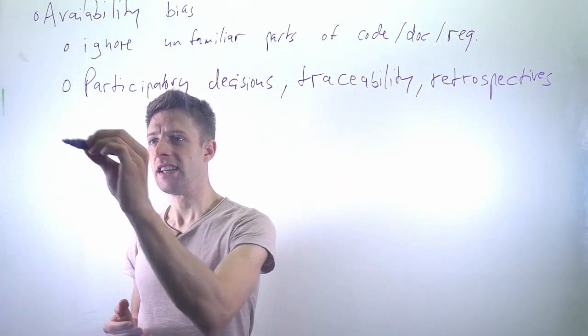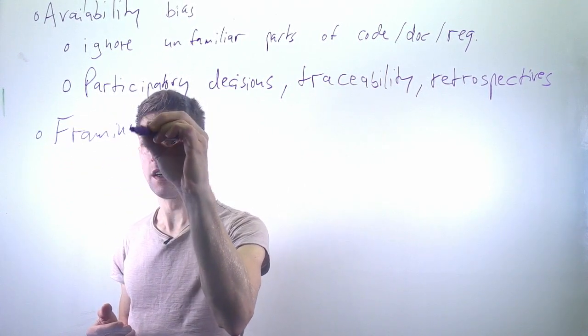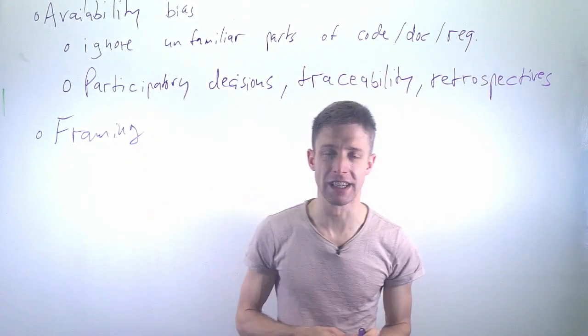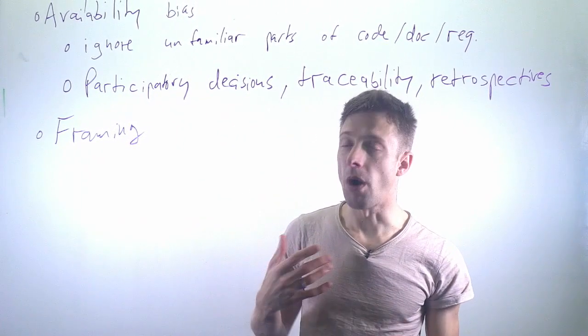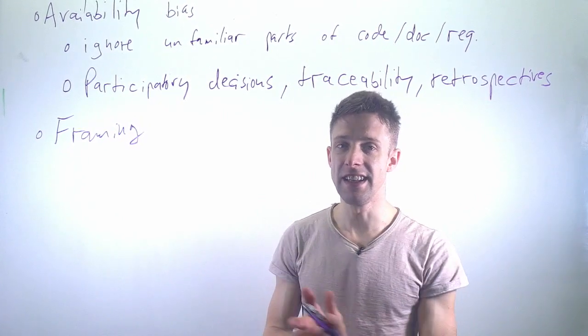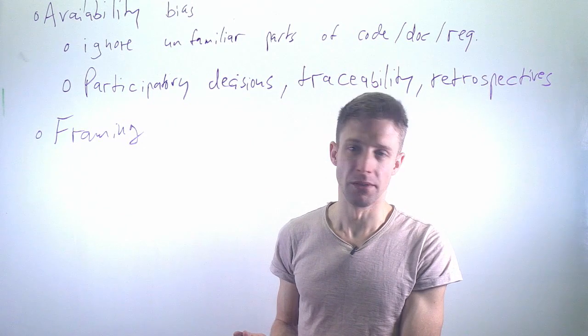So that's availability bias. Then we have the framing effect, and that's another one of the examples I gave in the beginning. So framing is this kind of way of, for example, posing a question in a certain way that leads to you reacting in an accordingly way.